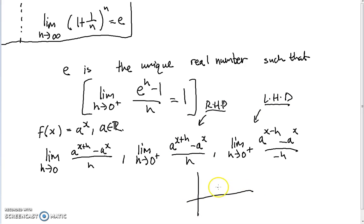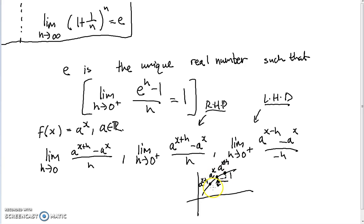Graphically, what we're saying is: if that's our function, then this is A to the x plus H, and this is A to the x. What we do is calculate the slope of this secant line by taking the change in y and dividing by this difference in x. Alternatively, we could take some point A to the x minus H, calculate this negative change — A to the x minus H minus A to the x — divided by negative H. The slopes from both sides should tend to the instantaneous slope.